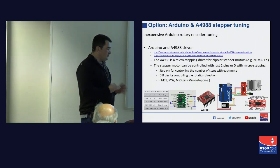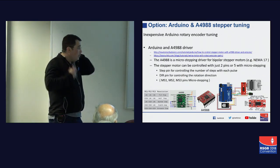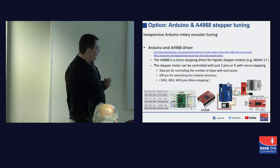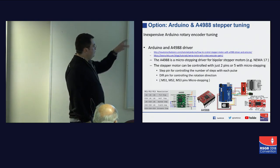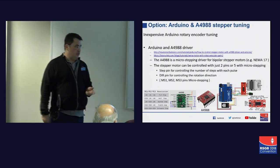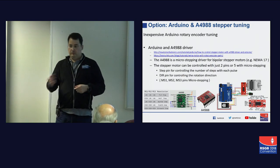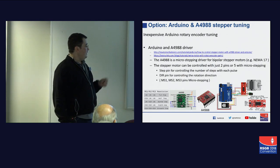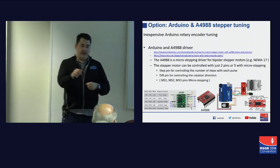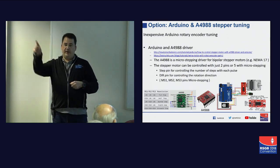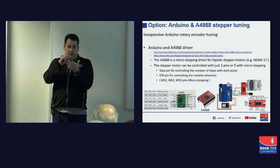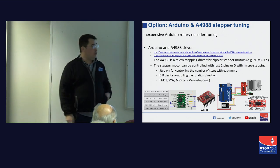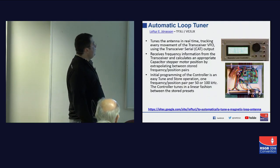If you want to build a straightforward simple remote tune option, you can get an Arduino, an A4988 stepper motor controller, and a little rotary encoder. There are two links to projects which you can download a sketch to your Arduino from — it will allow you to turn a rotary encoder up or down and write the tuning position that has been recorded manually.